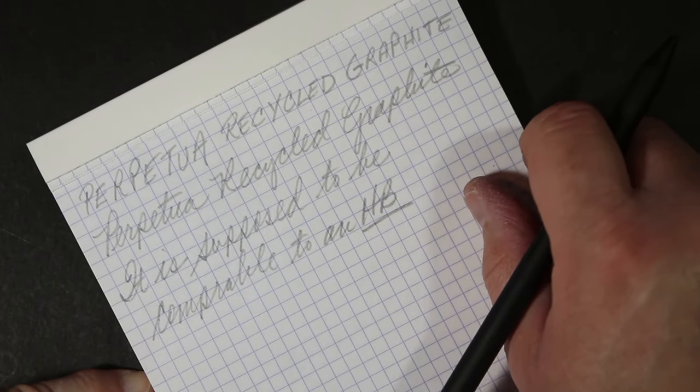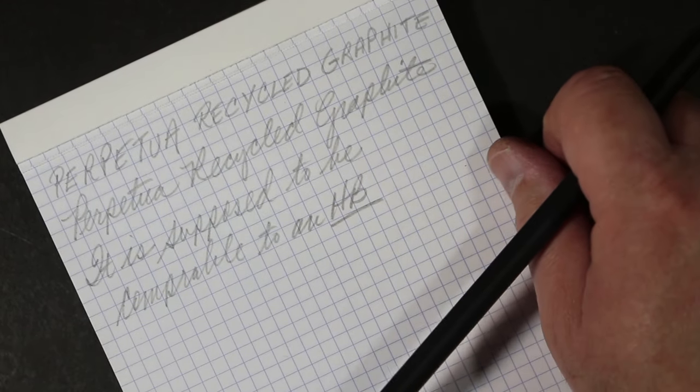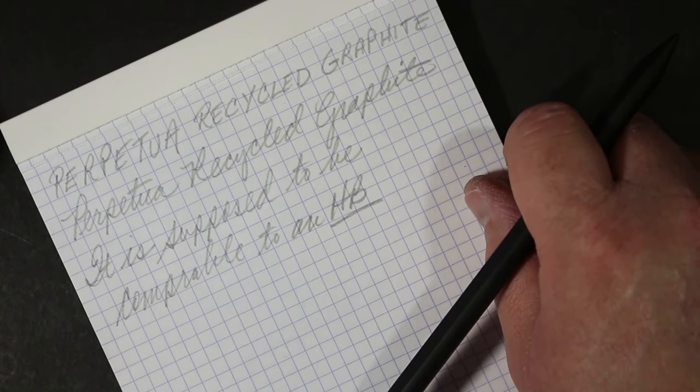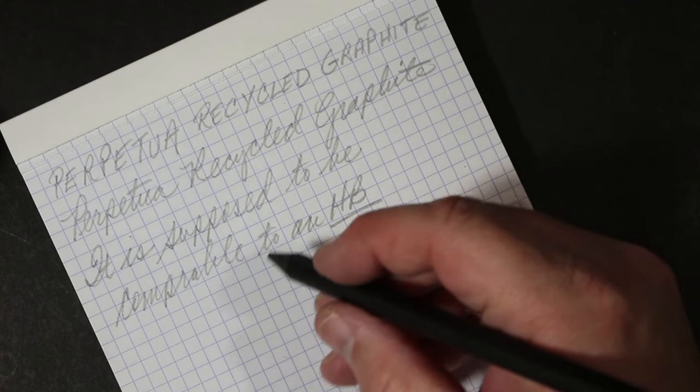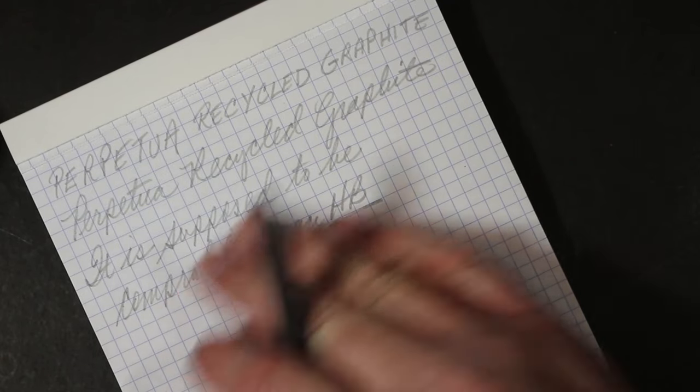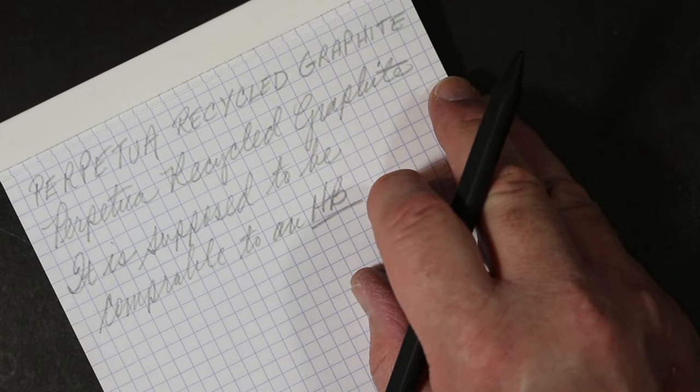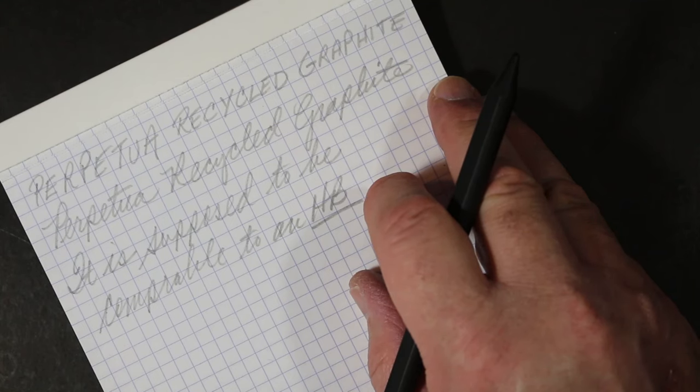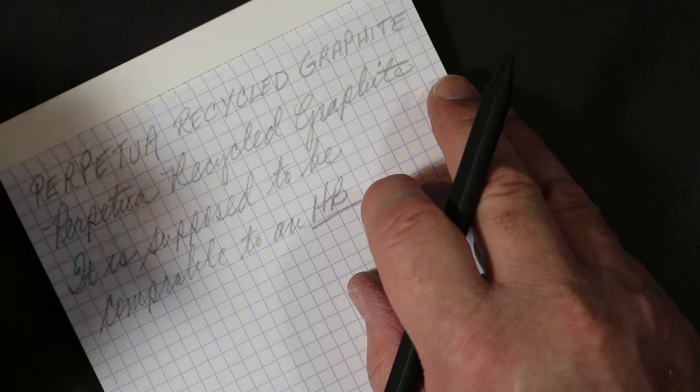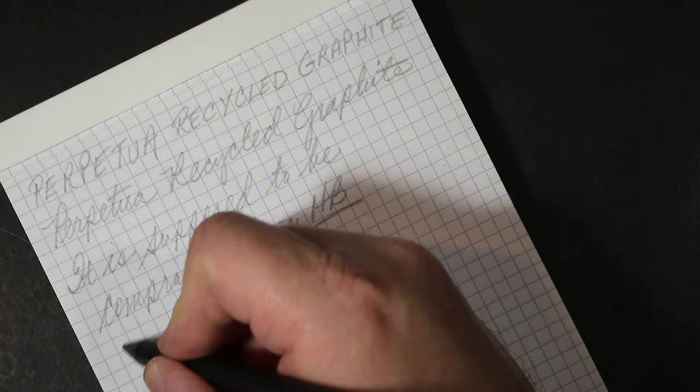Well, it's supposed to be comparable to an HB. I would argue with that, and perhaps you can tell it is a little bit on the lighter side. It's not particularly a hard pencil to the feel, but you can I'm sure hear some of the feedback from this pencil. But I would put it more as a number, not an HB number two, but probably more like a three or an H pencil.